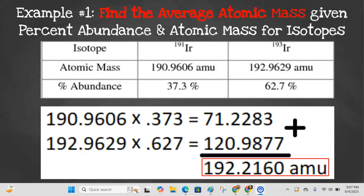That's how we find the average atomic mass for an isotope as well. Given the information about IR that we're given in this chart, this is how we would calculate the average atomic mass. First you take the atomic mass of the first isotope, the 190, multiplied by its percent abundance. Don't forget to turn that percent into a decimal. Take the mass of your second isotope, the 192.9, times its percent abundance, 0.627, and you get your numbers. All you have to do is add them together, and there's your average atomic mass for these two isotopes. So 192.2160 amu.